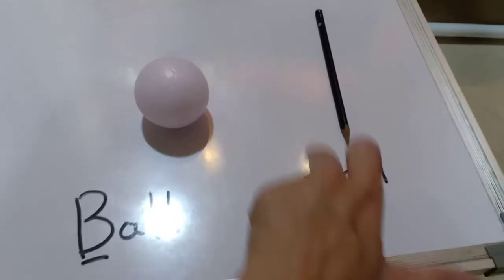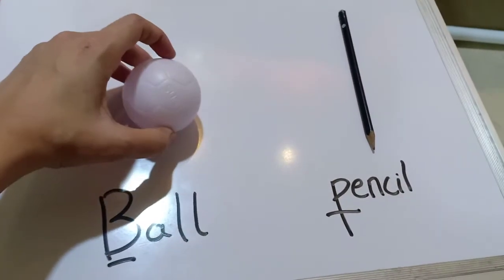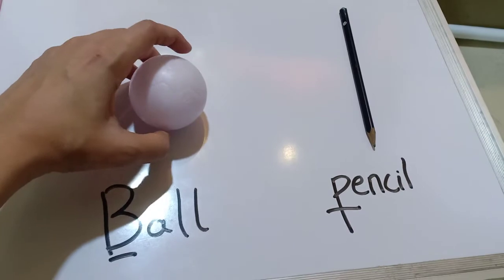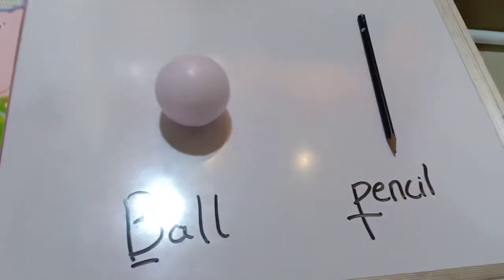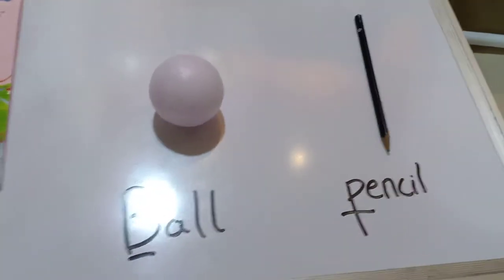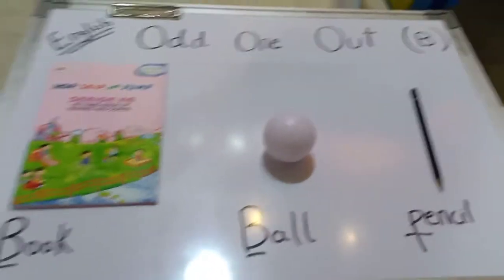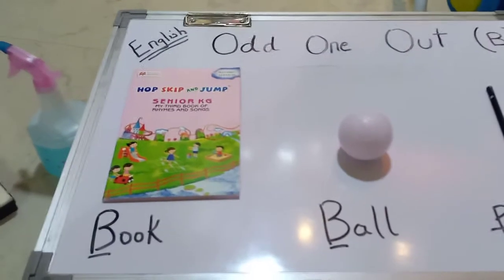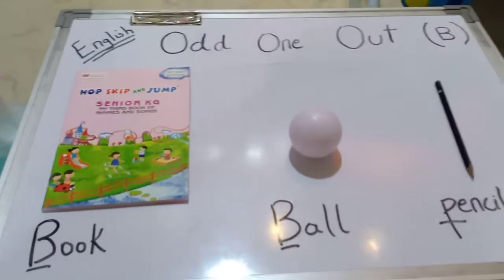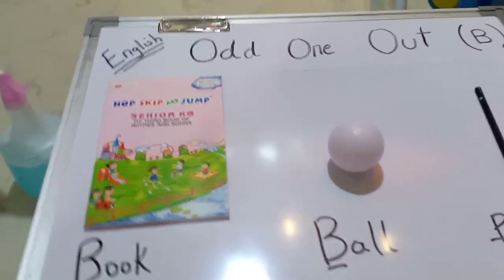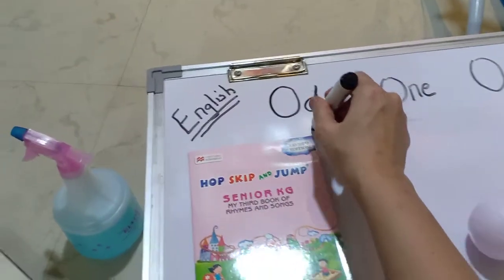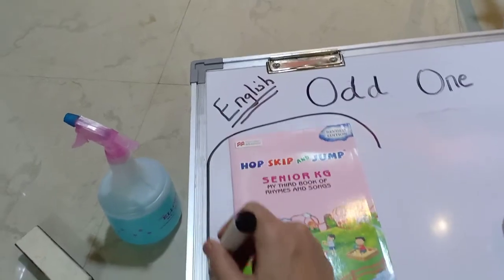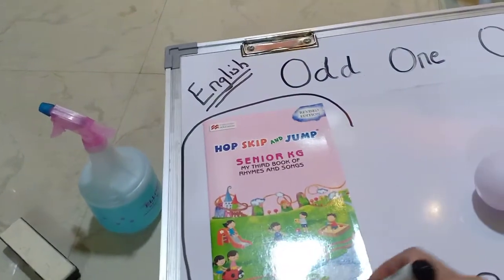Now when we look at pencil, it is P-E-N-C-I-L, pencil. So pencil is starting from the letter P. What we have to do here is circle the objects whose sound starts with B.